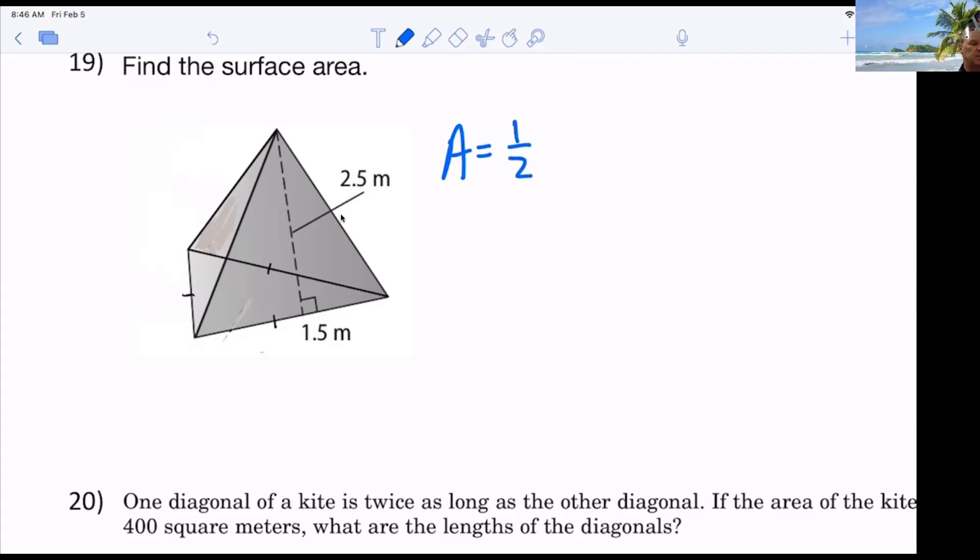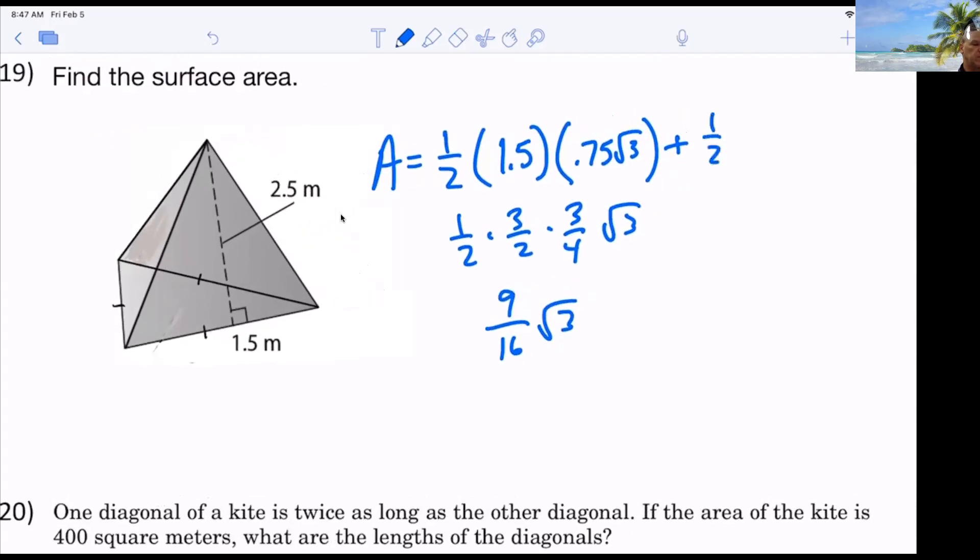So everyone should be able to just knock out. One half times the base, which is what? 1.5. 1.5 times 1.5 times one half radical 3. And so that's what? 9 over 16 radical 3. Plus 1.5 the perimeter. And the perimeter was 4.5, which is 9 over 2 times the slant height, which is what? 5 halves also. So that would be plus 45 over 8 meters squared. Anybody have any issues with that? And I don't care if you have the decimal, whatever 9 16 says.